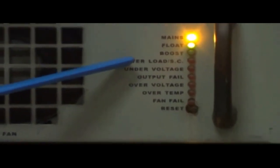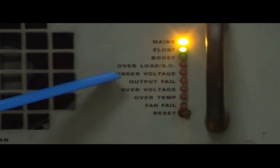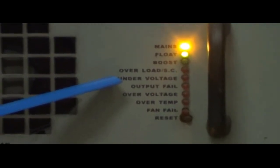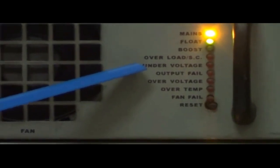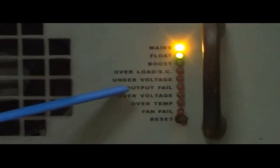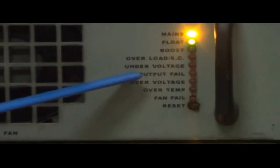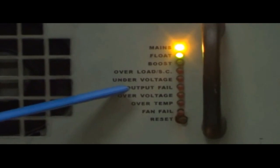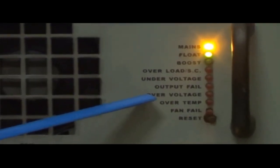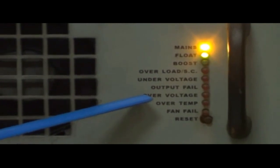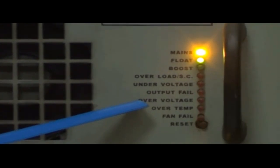Under voltage: This shows that the output DC voltage of the module is low, that is less than 44.4 volts. Output fail: This indication shows that the output DC of the module is not available. Over voltage: This shows that the output DC voltage of the module has exceeded normal output operating range.